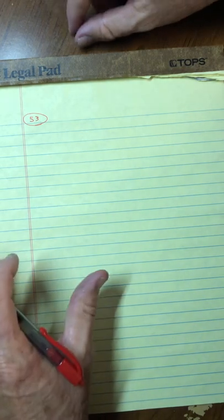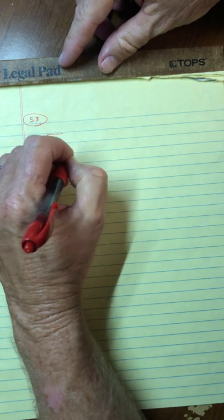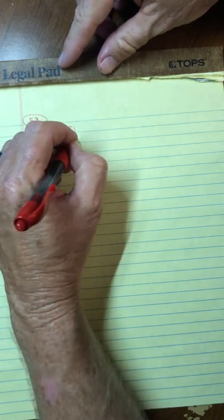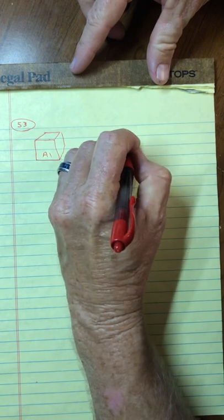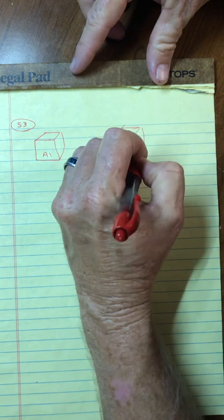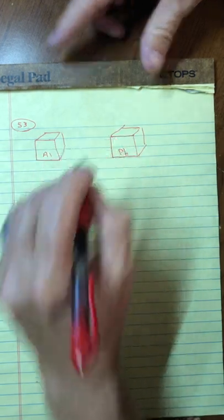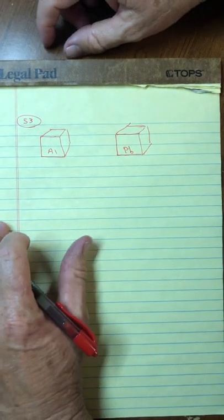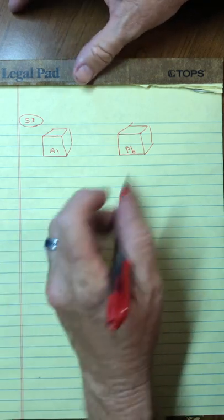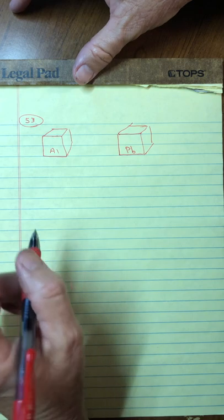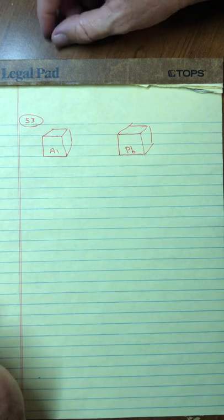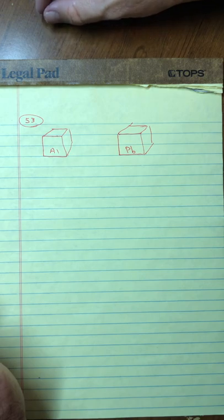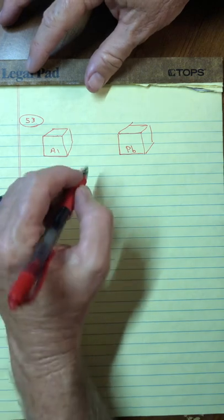53 says, if you have two cubes that are the same size, one is made out of aluminum, but the other is made out of lead. Let me draw a 3D cube here. So here's my cube, and it's made out of aluminum. Let's draw another cube. And what did this say? Lead. So PB here. So I've got one out of aluminum and one out of lead. You have two cubes, same size. Both cubes are allowed to sink to the bottom of a water-filled aquarium.